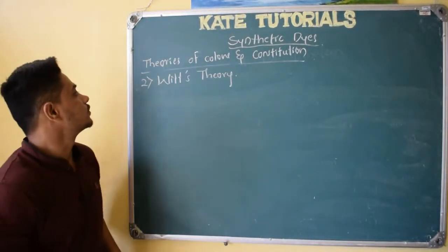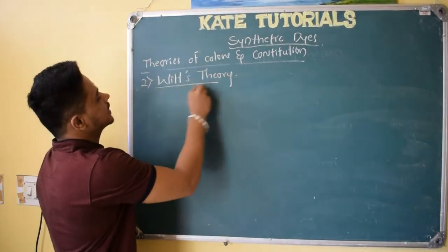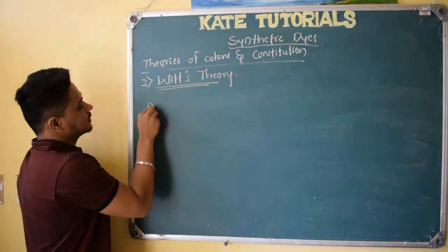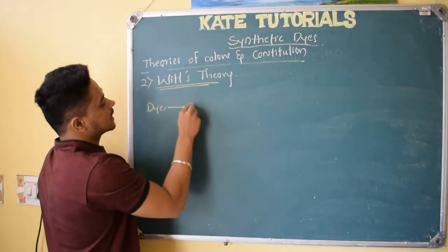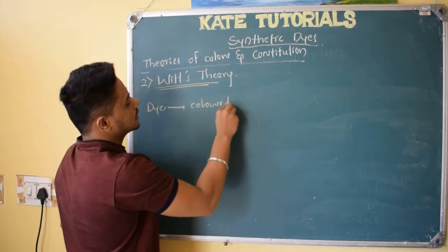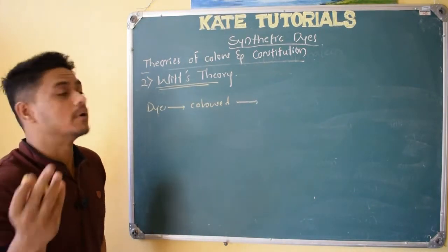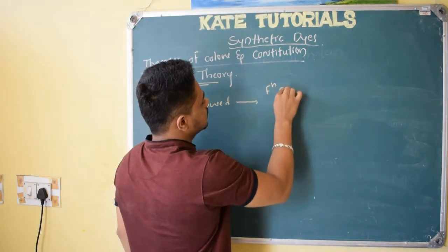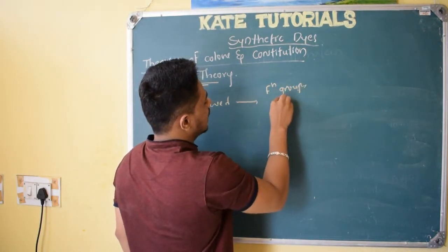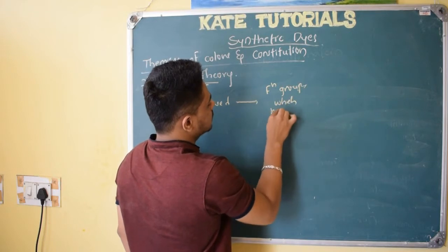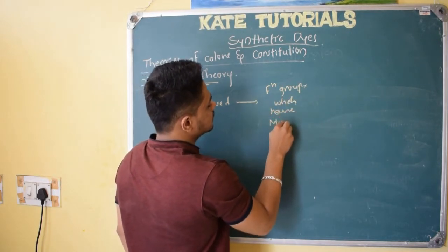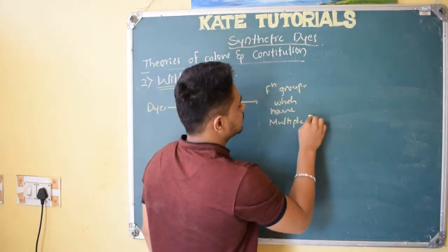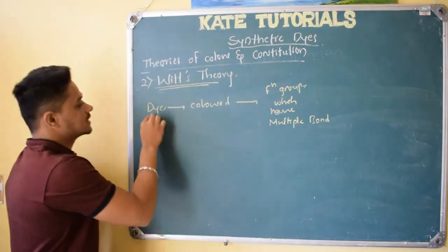Hi friends, welcome to this class. In this video, we are going to study Witt's theory to explain why dyes are colored. According to Witt's theory, dyes are colored because they contain some functional groups which have multiple bonds — double bonds or triple bonds — because of which these dyes are colored.